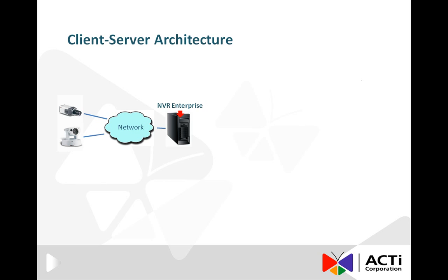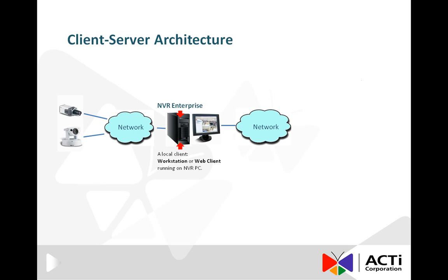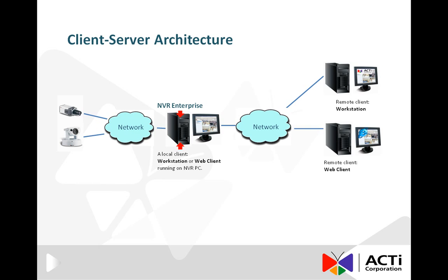How do those client programs access the NVR, and what kind of network architecture can support this? Typically, the server side, which includes cameras and NVR, is built on a local area network. The NVR can be accessed by a local client, meaning the client program is located on the same PC as the NVR itself. Any client program running on another PC is considered a remote client, whether that PC is on the same LAN or on a wide area network. NVR gets video from all cameras, and both local and remote clients get video from NVR.